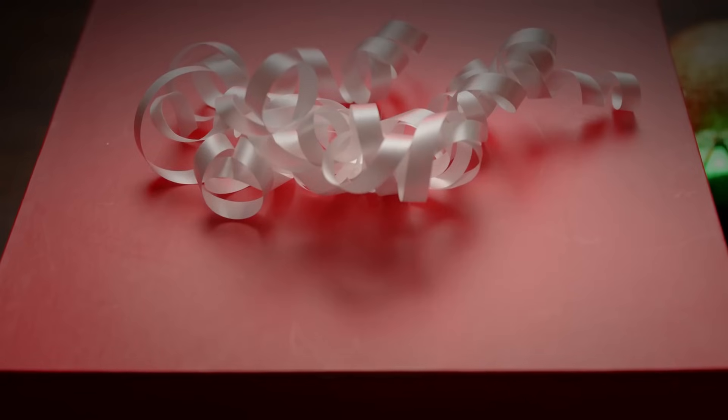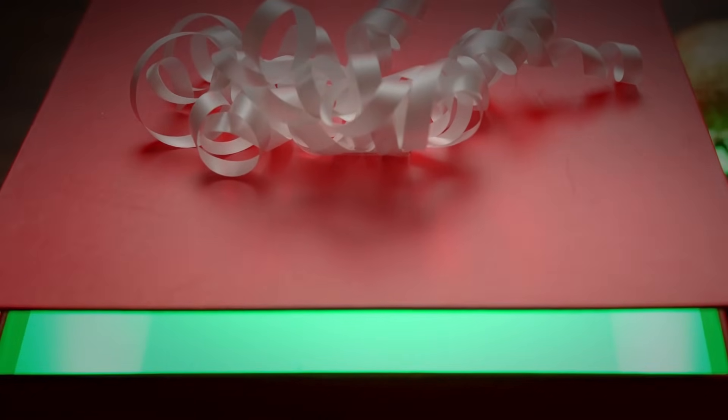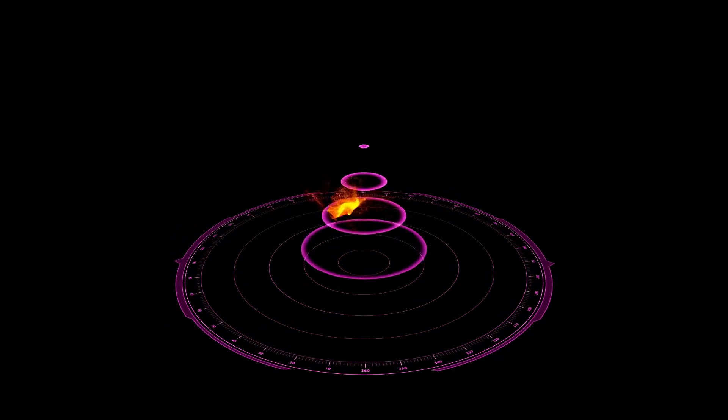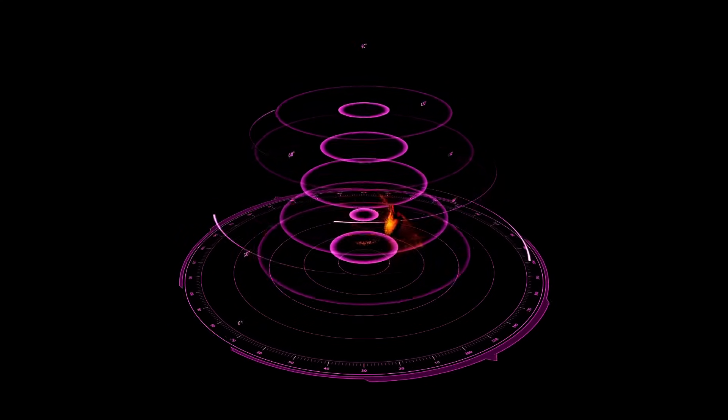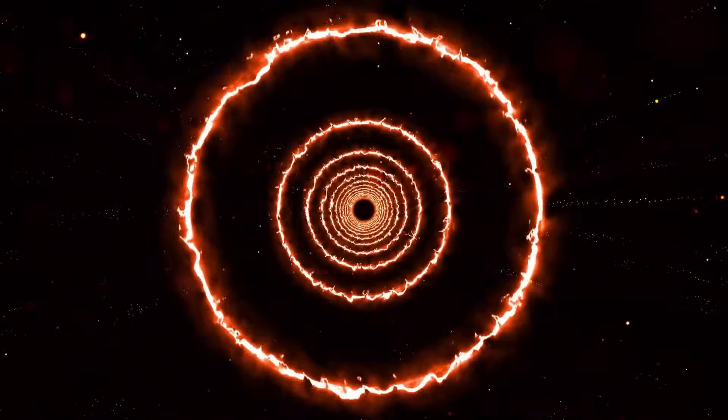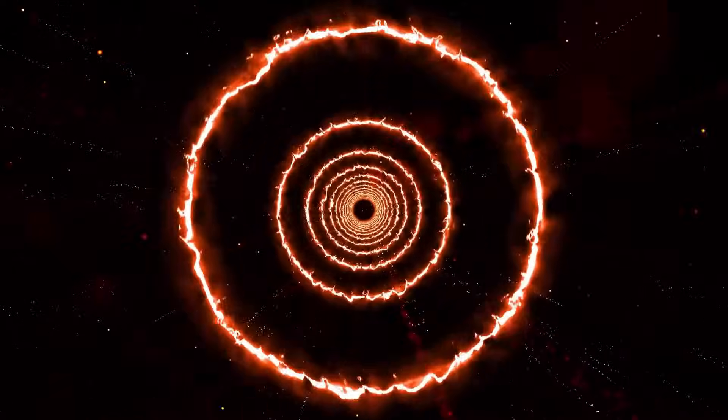Betelgeuse, one of the brightest and most recognizable stars in Orion, has always intrigued astronomers. But now it's more than a red giant. It's a real-time case study of stellar death. Webb has detected rare elements like technetium and yttrium forming inside the explosion, materials that are only synthesized during the final breaths of massive stars.